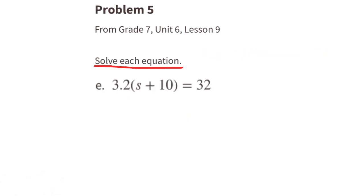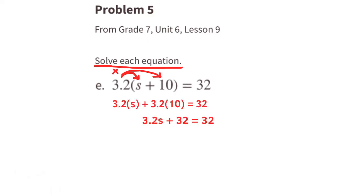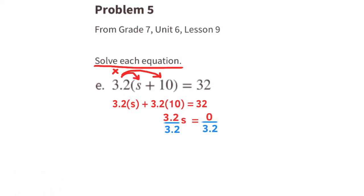Part e: use the distributive property to multiply 3.2 times s and 3.2 times 10, giving 3.2s plus 32 equals 32. Subtract 32 from both sides: 3.2s equals 0. Divide both sides by 3.2 and s equals 0.